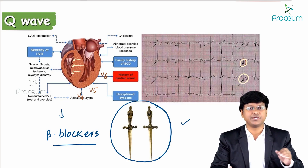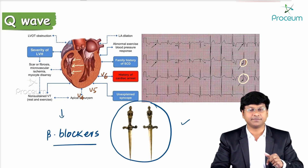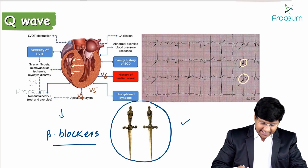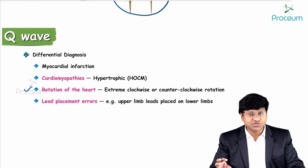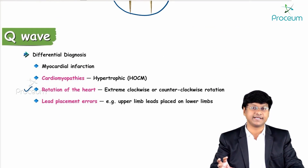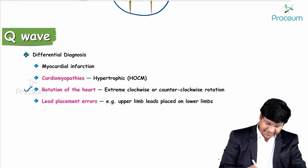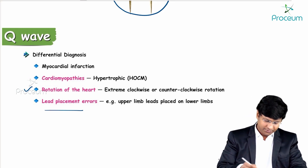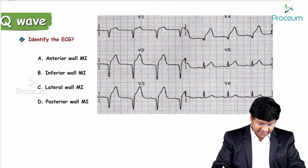Other conditions causing deep pathological Q waves include: hypertrophic obstructive cardiomyopathy, myocardial infarction, rotation of the heart — extreme clockwise or counter-clockwise rotation — and lead placement error, where upper limb leads are placed on the lower limbs and vice versa. These are the differential diagnoses for pathological Q waves.